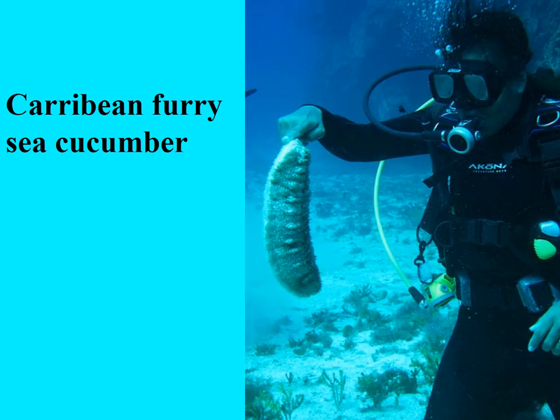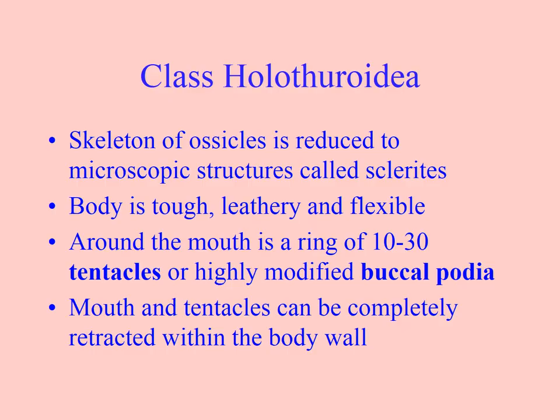Here's a pretty big sea cucumber — a lot bigger than the ones we have around here. They do get quite big. They have ossicles, but as mentioned in the first video, they're reduced to microscopic sclerites. Instead of using the ossicles as defense, they have a tough, leathery, and flexible covering that is often quite noxious tasting. Most predators don't really like to eat sea cucumbers — the insides are more palatable, but not the tough outer skin.